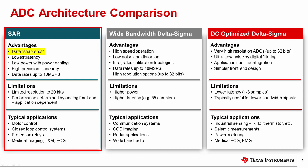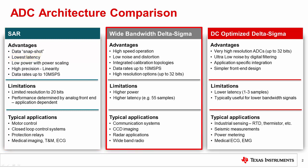First, the SAR converter is most commonly used to capture a snapshot in time for a transient signal. SAR converters also have the advantage of low latency — the delay between when the input signal is applied and the output conversion is available. We will discuss latency in more detail later in this series. The wide-band Delta-Sigma has many similar characteristics to the SAR, except that it frequently has a noise and resolution advantage, though at the disadvantage of higher latency than a SAR.